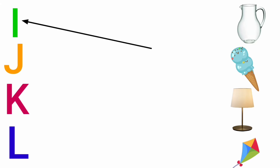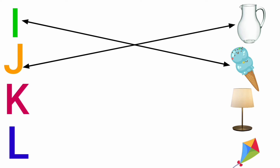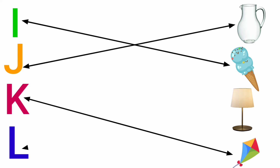I for ice cream, J for jug, K for kite, L for lamb.